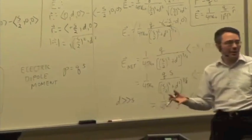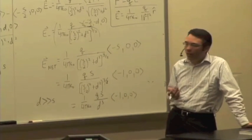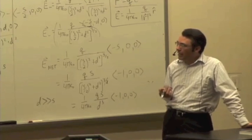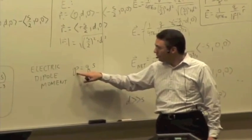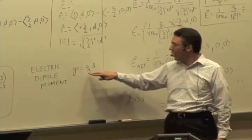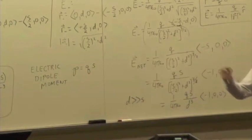So why define this p thing? Well, for microscopic dipoles like molecules, it's often easy experimentally to measure directly the dipole moment. You might not know the individual charge on each side of the dipole. You might not know how far they're separated.